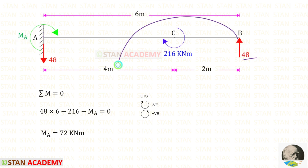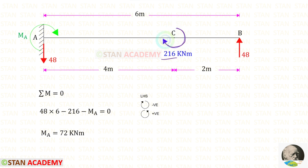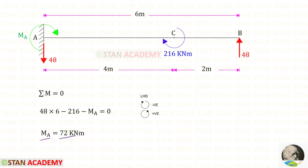Now let us take moments about A and find MA. RB is acting in the anti-clockwise direction, so it will be positive, and the distance is 6, giving 48 × 6. The moment of 216 kNm is acting in the clockwise direction, so it will be negative. Finally, for MA we will get a positive value, which means our assumption is correct.